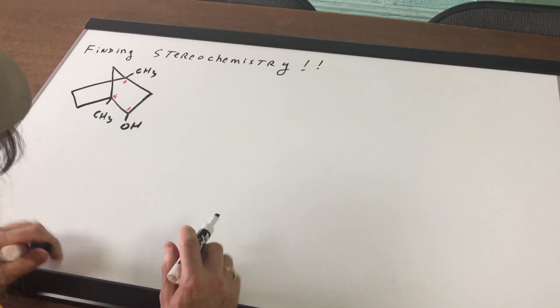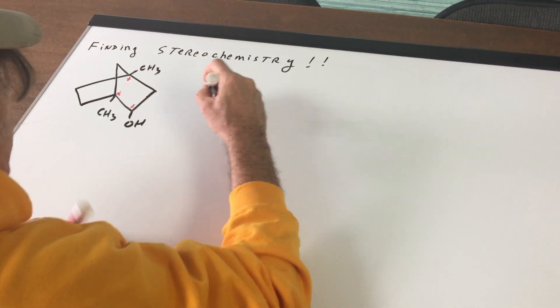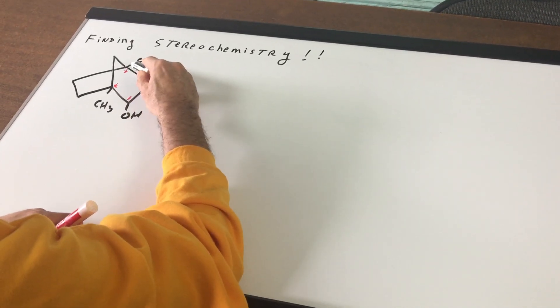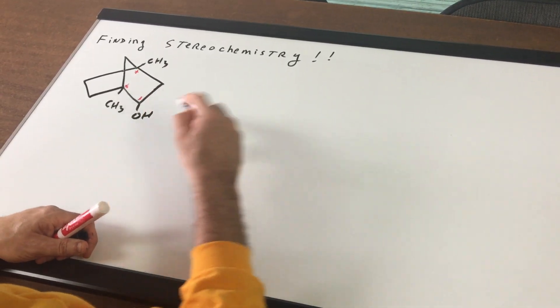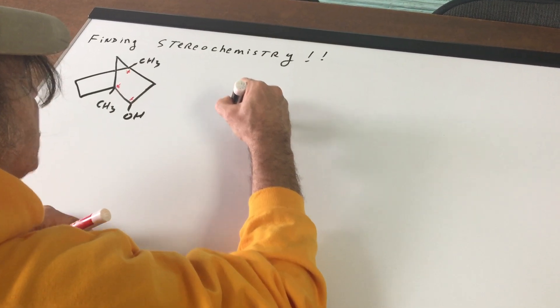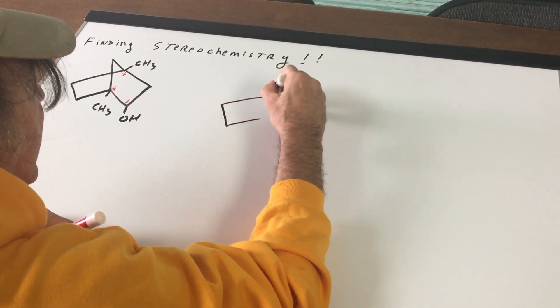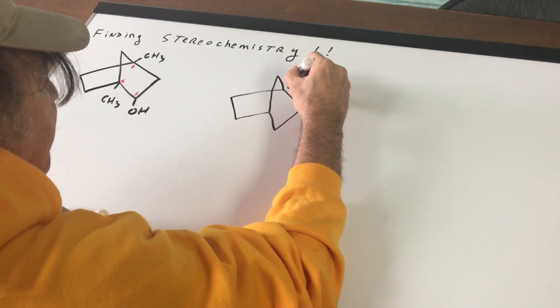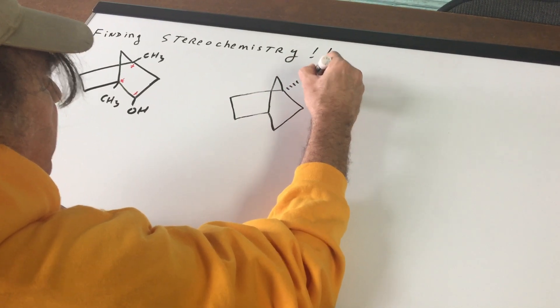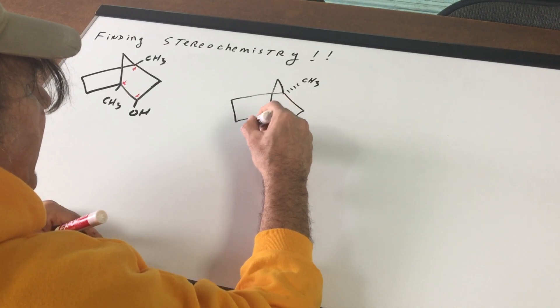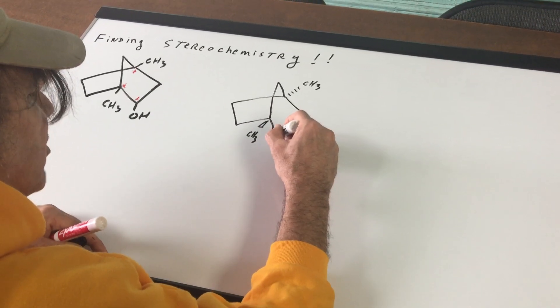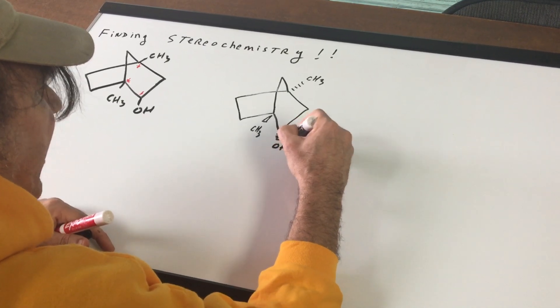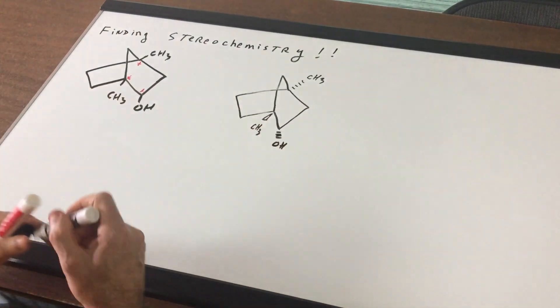Now, the trick to the problem is I'm going to rewrite this. This methyl group is coming out of the blackboard, and this methyl group is going into the blackboard, and this is going down. So why don't I just rewrite it—that's the gimmick—and I put this going in, this is going out so it's a wedge, and I'll just keep this going down. Down means it would be a dash. So you have to first do this.